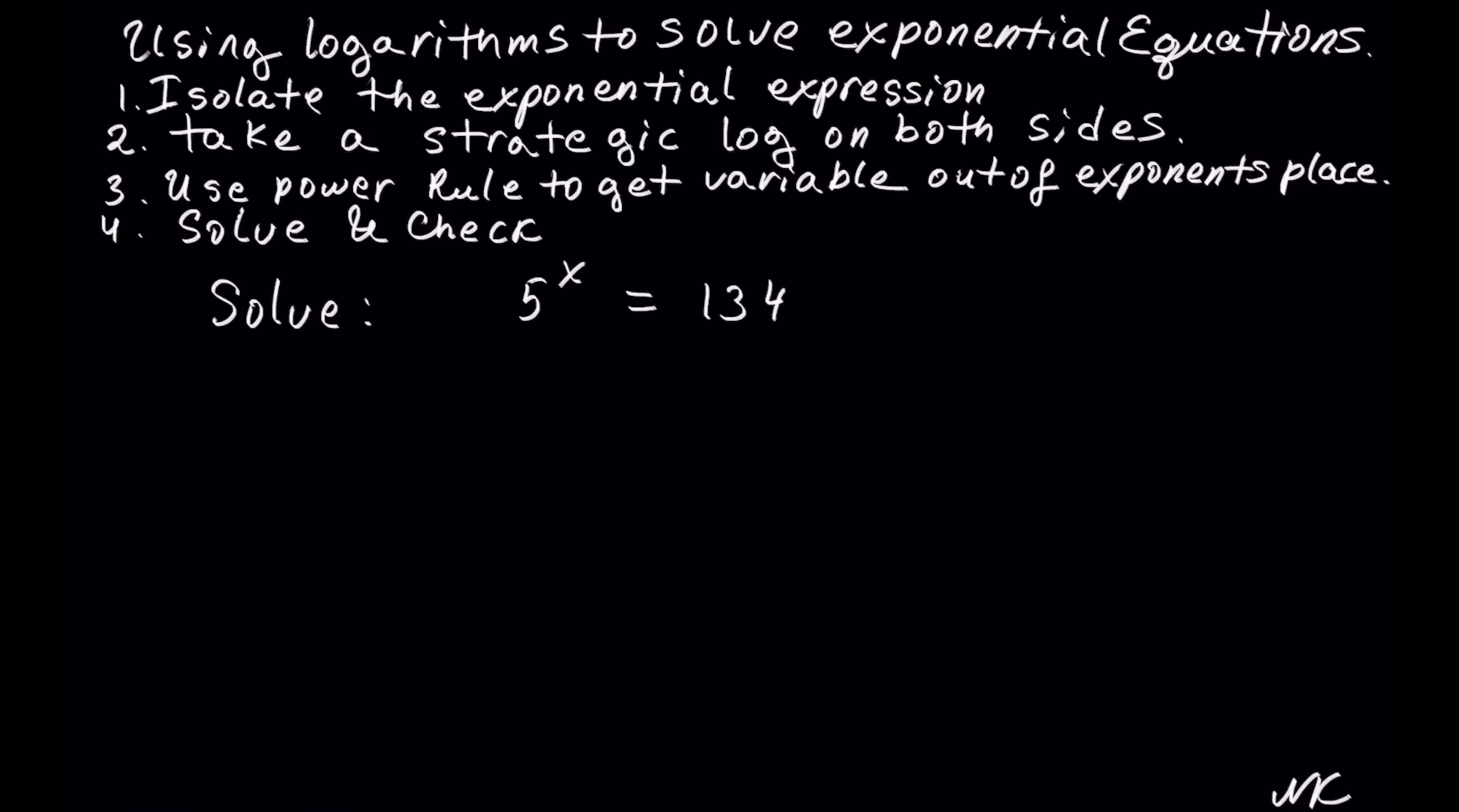In this example we have to solve 5 to the x equals 134. On this step we need to take a strategic log on both sides. If the base was e or 10, we should use the appropriate inverse log. But since we have 5, I'm just going to use ln because it's shorter than log.